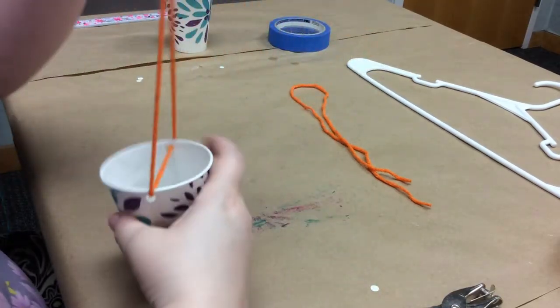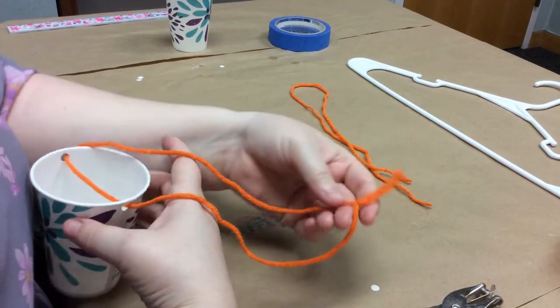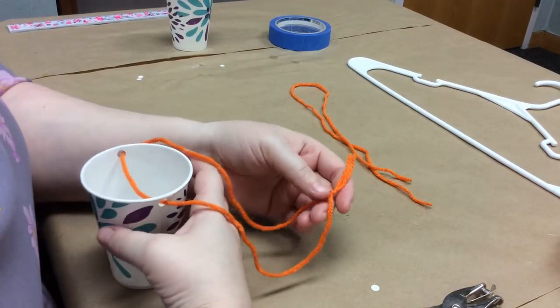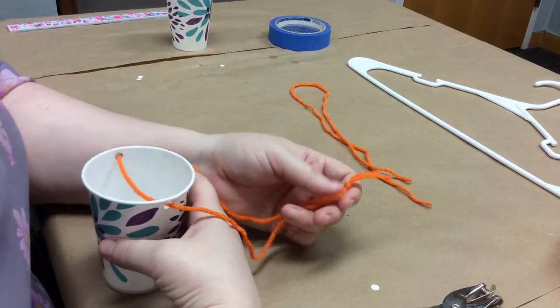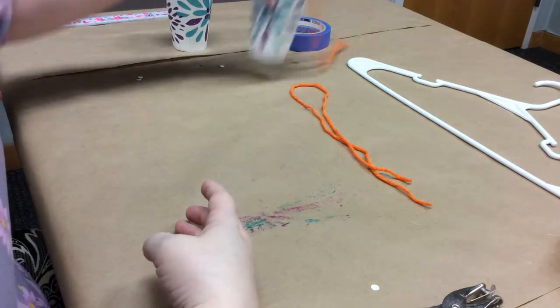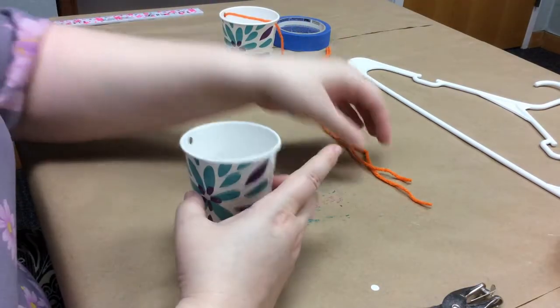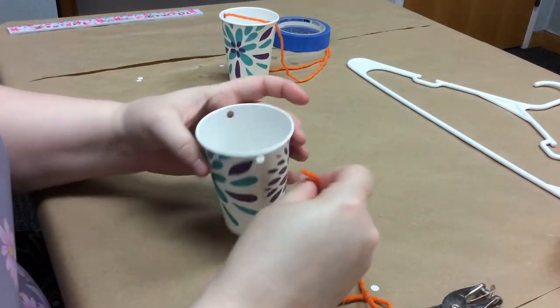So we're going to try our very, very best to get our other knot the same as this one. That is very hard to do. So don't feel bad if you're a little off. So there's one cup. That's one of our sides of our balance scale. We're going to do the same thing with the other.